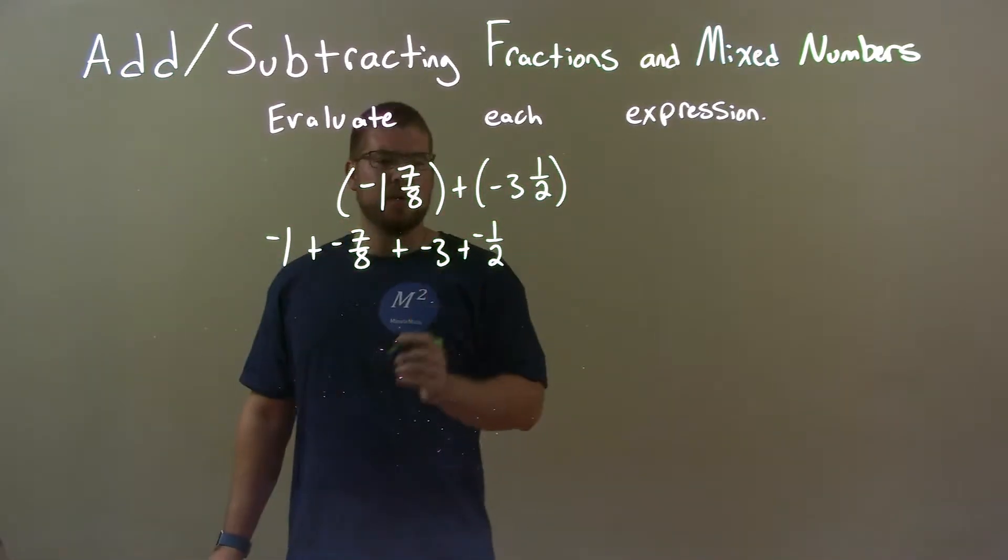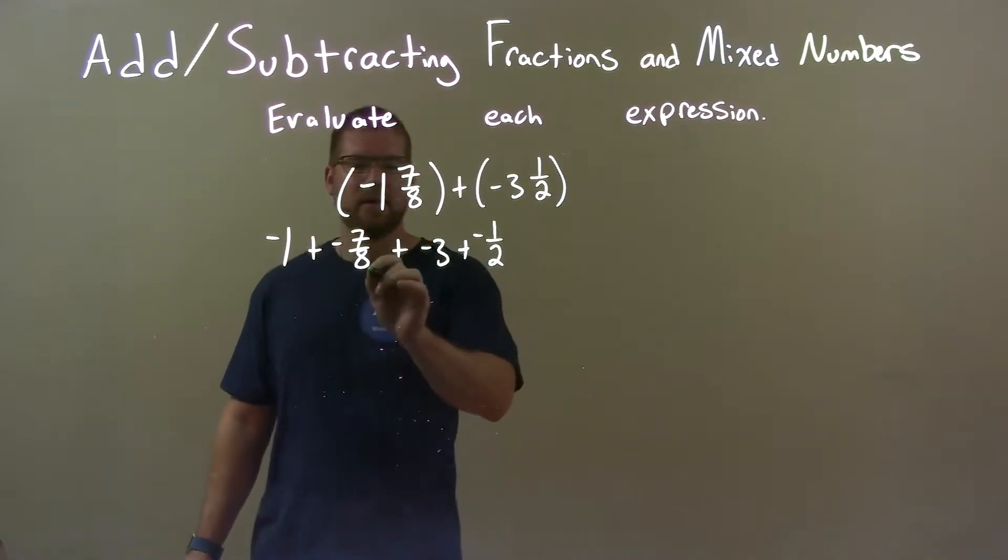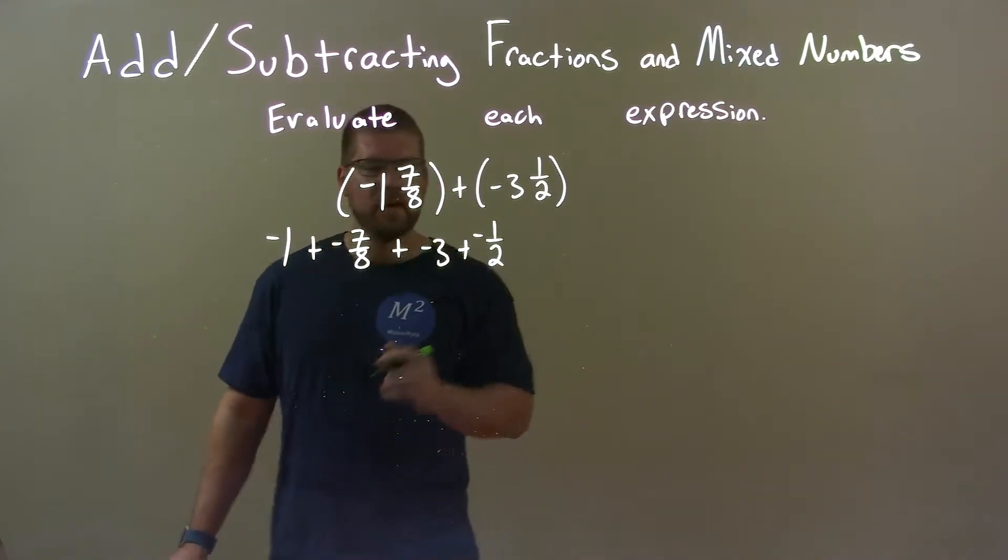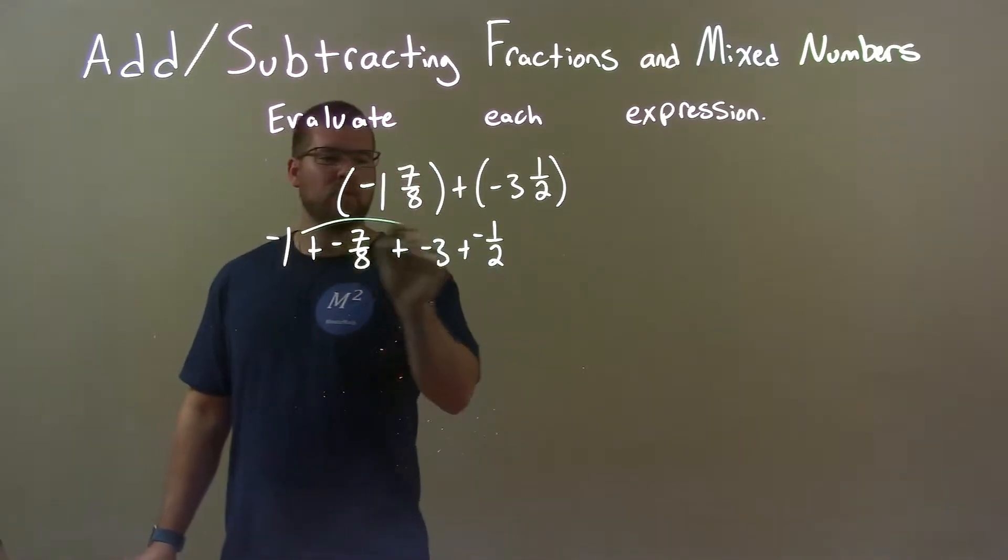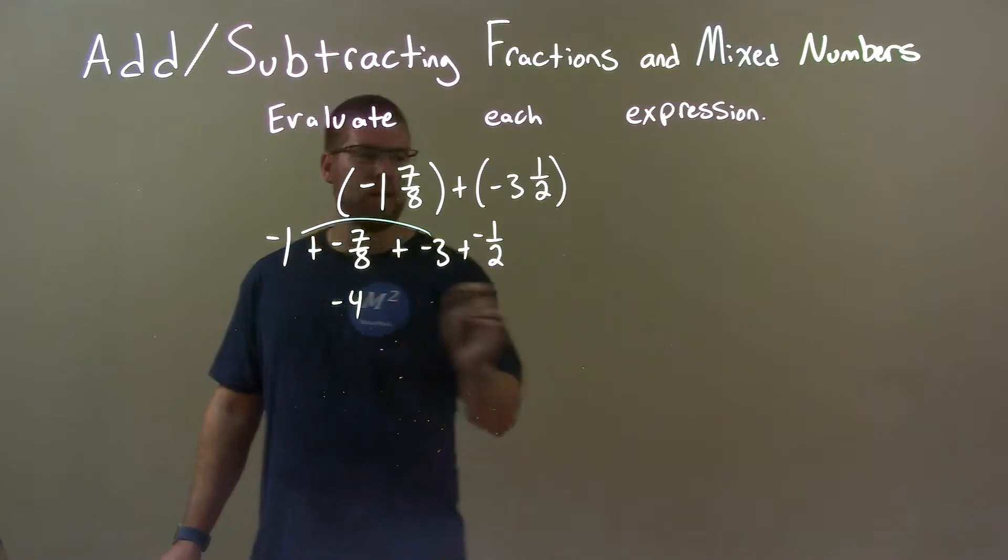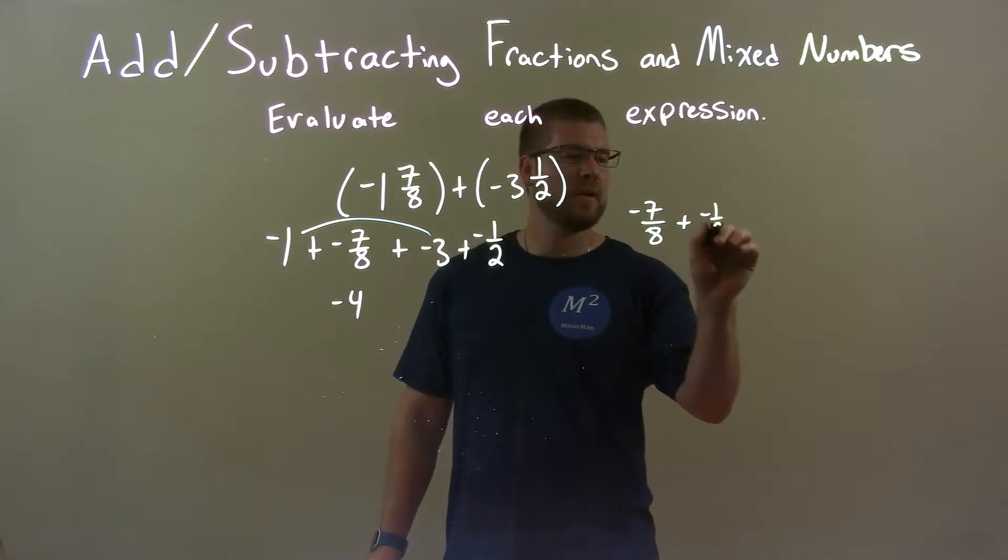So, what I'm going to do now, once I broke it up, I'm going to add my whole numbers, but I can't directly add these fractions. So we're going to have to break those down and figure out what they have to be. Negative 1 and negative 3 is a negative 4. But, what I'm going to do here on the side is a negative 7 eighths plus a negative 1 half.